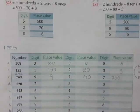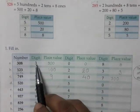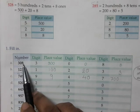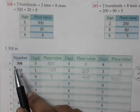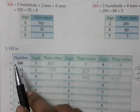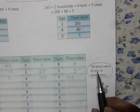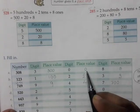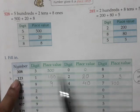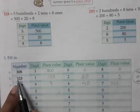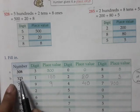Now let's see more examples. For 308: we know the positions are 100's, 10's, and 1's. The place value of 3 is 300. If there is a 0, the place value of 0 is always 0 — so wherever there is a 0, you write only 0. The place value of 8 is 8 because it is in the 1's place.